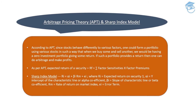As per the Arbitrage Pricing Theory, expected return on a security is: risk-free rate of return plus the sum of factor sensitivities multiplied by their respective factor premiums. If this question appears in an examination, you'll be given all three figures and asked for the expected return. Simply add up the products of factor sensitivities and factor premiums, then add the risk-free rate to get your expected return on the security.